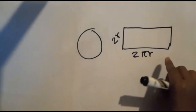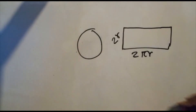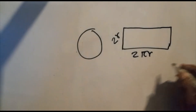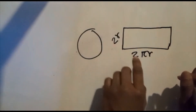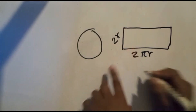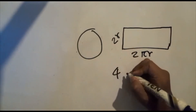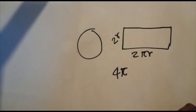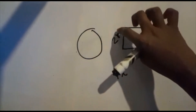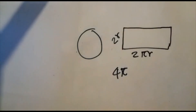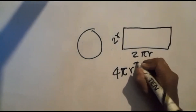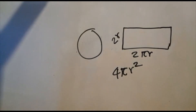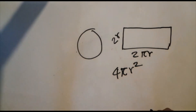So 2 pi r multiplied by 2 r is going to give us 4 pi r squared. Combining the 2's together, 2 times 2 gives us 4, and combining the r's together, r multiplied by r gives us r squared. So now we have derived the formula for the surface area of a sphere. Hope you enjoyed this video, see you guys!